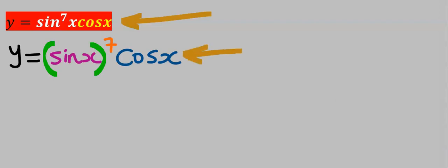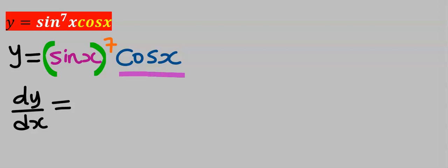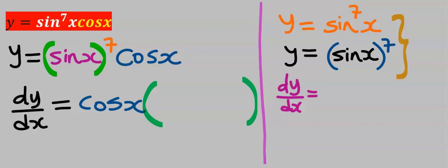This and this are the same. Next I'm going to keep cos x constant, then I will differentiate sine x in bracket to the power of seven. Next I'm going to differentiate this and I'm going to bring the answer here.